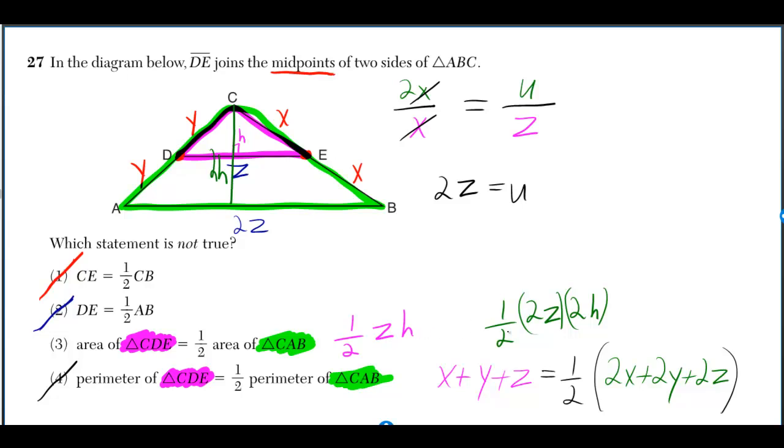And since we're multiplying the pink one by 2 twice to get the green one, we could multiply it by 4 to get the green one, which means that the pink one is one-fourth of the green one, not one-half.